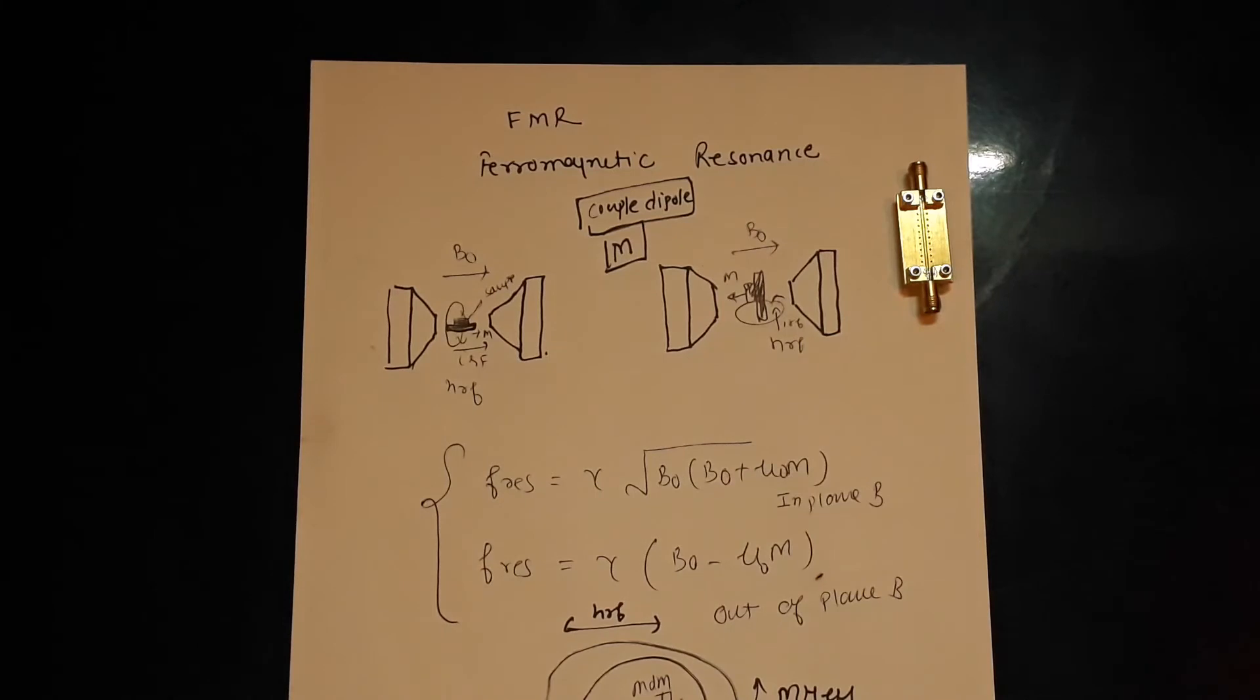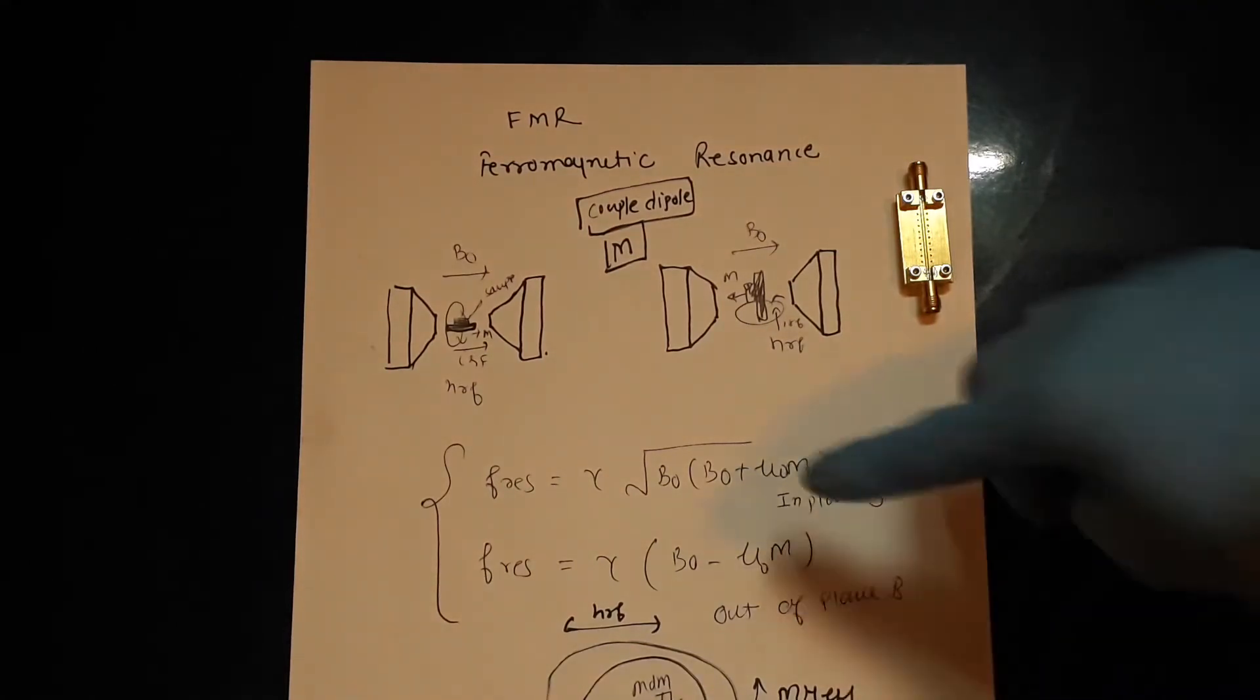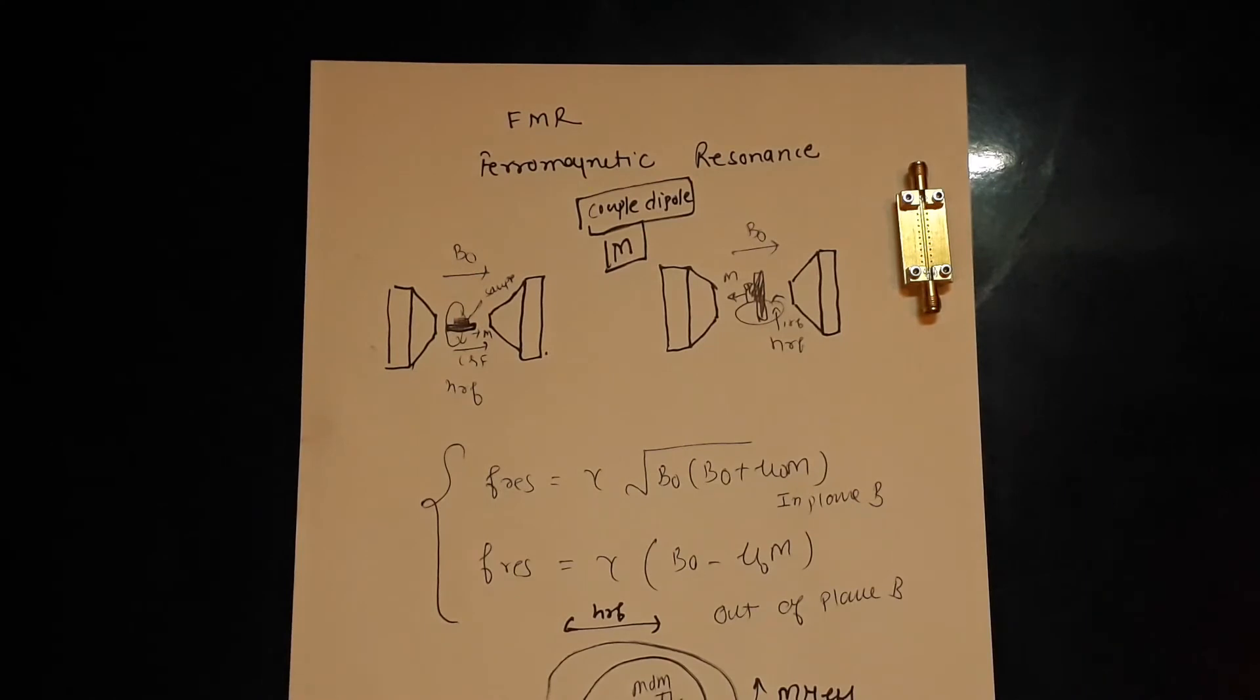You'll have two different formulas effectively. If your magnetization is not there in the sample it will turn out to the Larmor frequency equation, f equal to gamma B naught, which is very simple. That's all it should boil down to in the end.